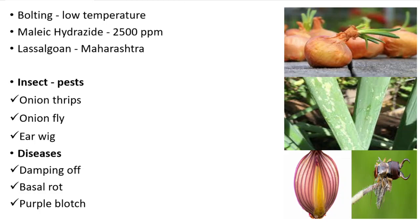Now let me tell you about the important insect pests and diseases of onion. Onion thrips, Thrips tabaci, is one of the major insects of onion. The damage caused includes whitish silvery patches all over the leaves at the initial stage, and later in severe cases the leaves dry from tip downwards.